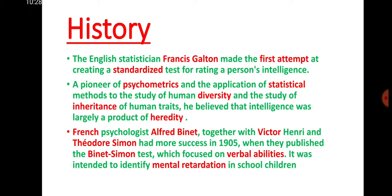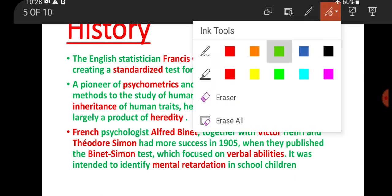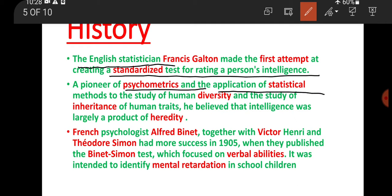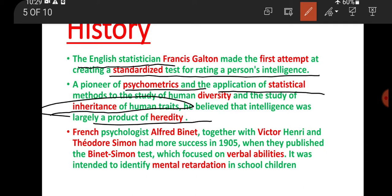Let's look at the history of IQ. First, Francis Galton, an English statistician, made the first attempt to create a standardized test to measure a person's intelligence and find a way to rate it. However, his test was not successful.